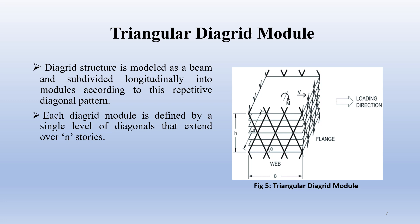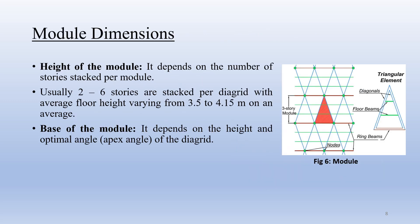Triangular diagrid module. A diagrid structure is modeled as a beam and subdivided longitudinally into modules according to its repetitive diagonal pattern. Each diagrid module is defined by a single level of diagonals that extend over n stories. In the figure, a triangular diagrid module is shown. The height of a module depends upon the number of stories stacked per module. Usually 2 to 6 stories are stacked per diagrid module, with an average floor height varying from 3.5 to 4.15 metres.